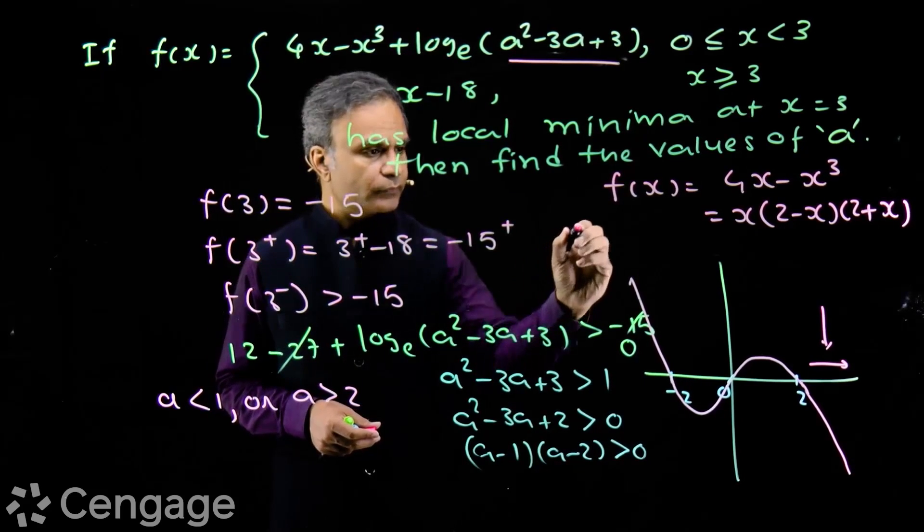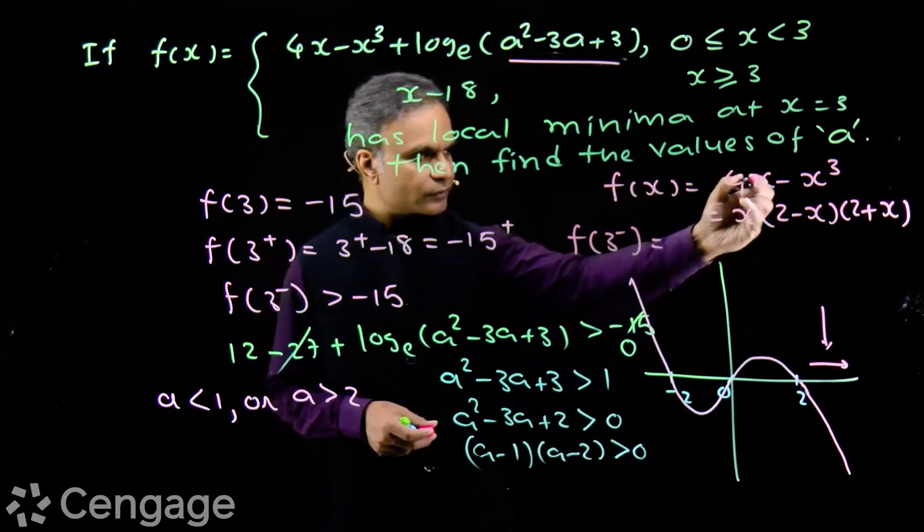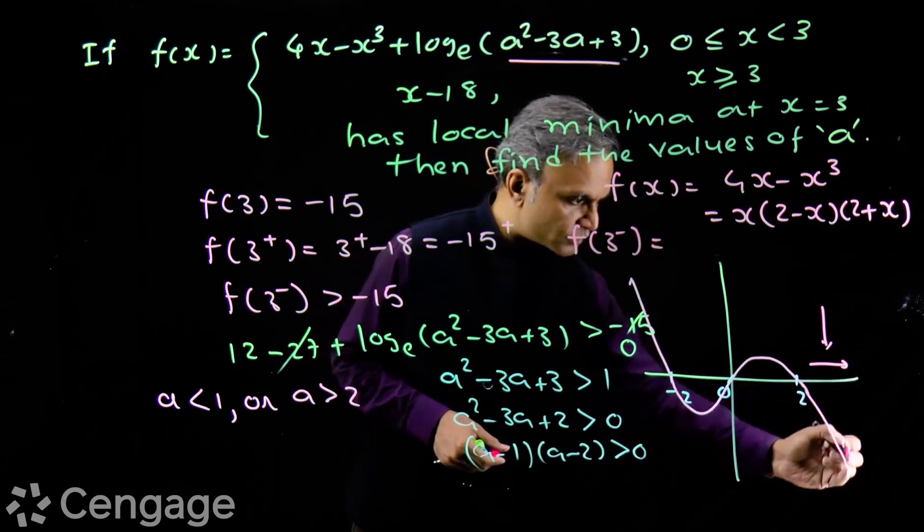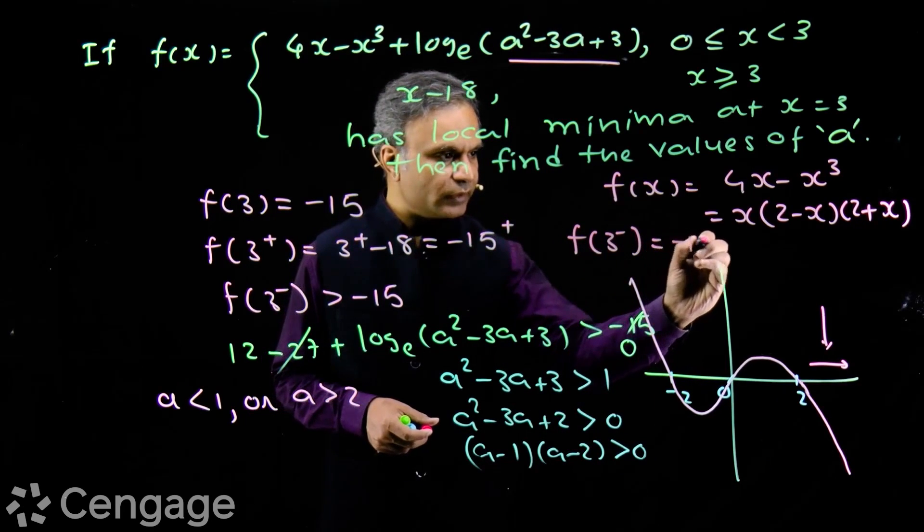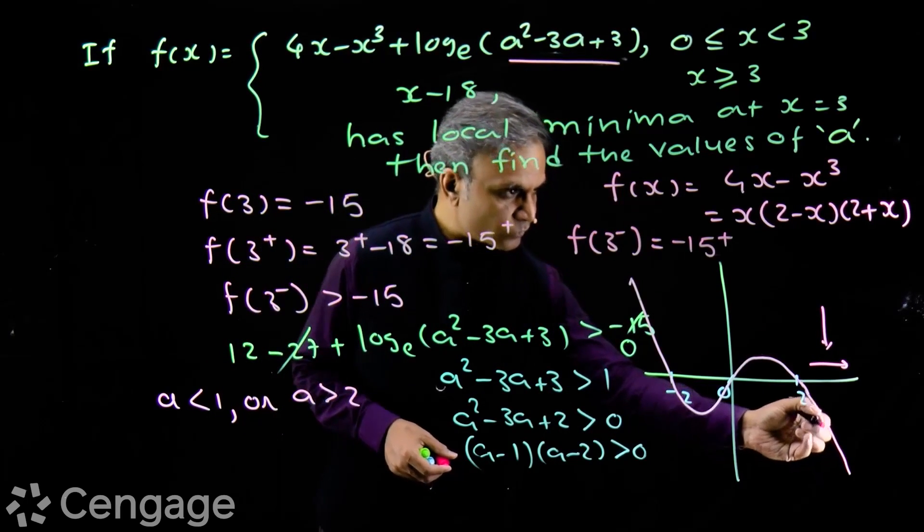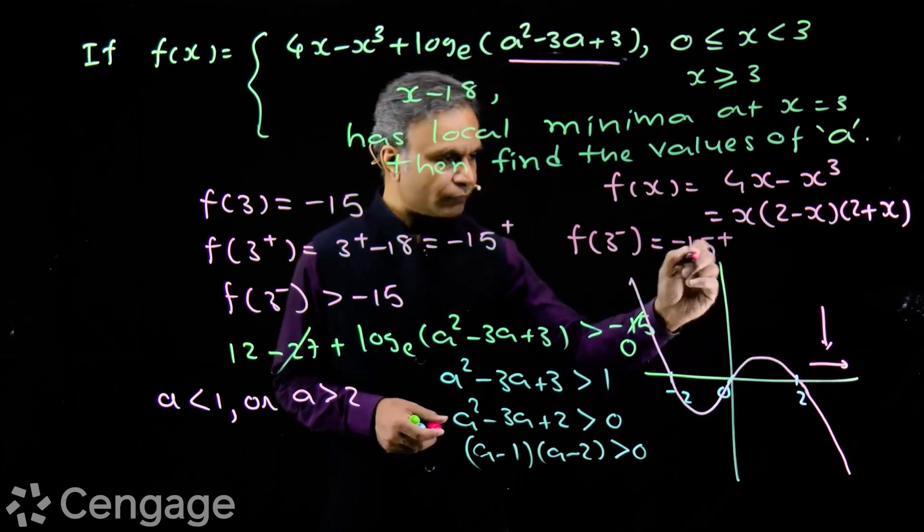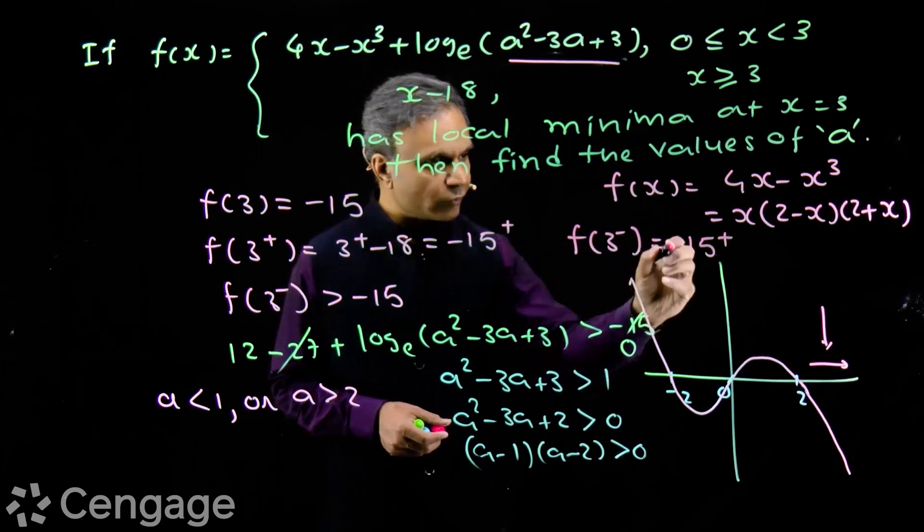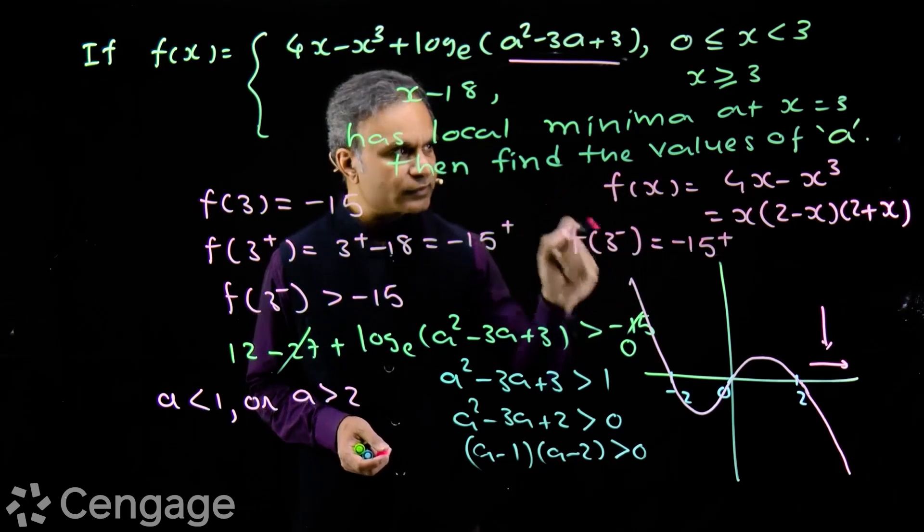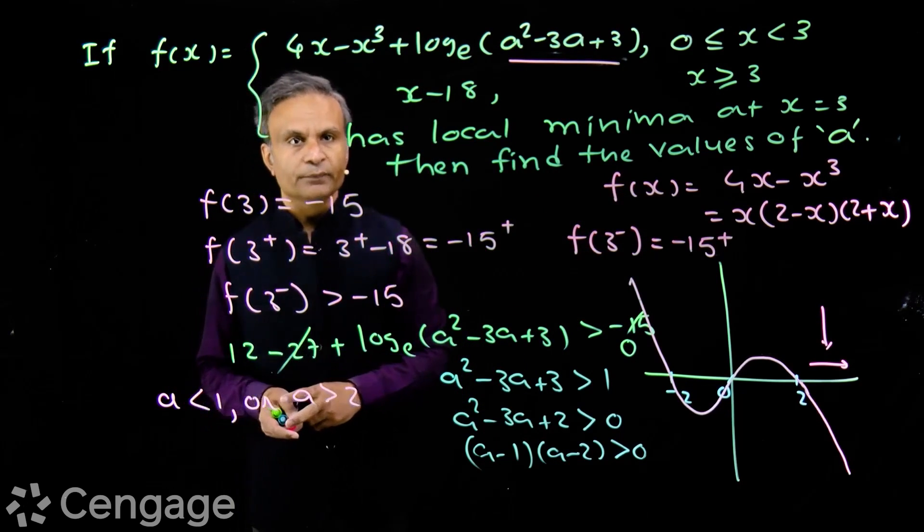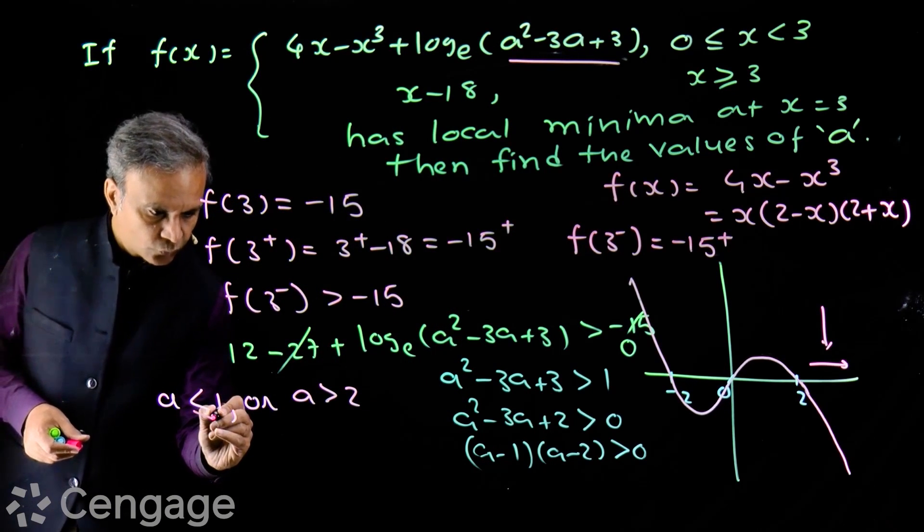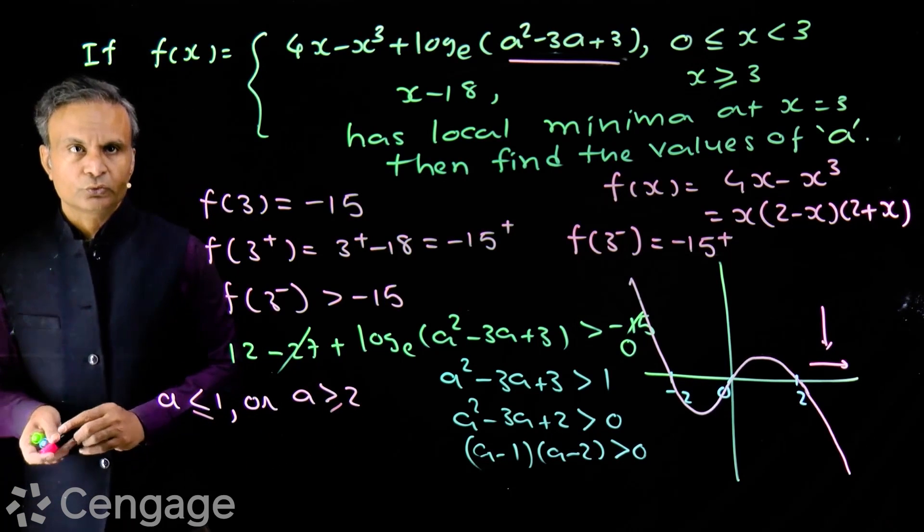Then, what will be f of 3 minus? If we put x equals 3, we get minus 15. At 3, value of this function will be minus 15. So f of 3 minus will be minus 15 plus. Function is decreasing here. So when we take value less than 3, the function value will be more than minus 15. We will have minus 15 plus. So in this case also, x equals 3 will be point of local minima. So we write here a less than or equal to 1 or a greater than or equal to 2.